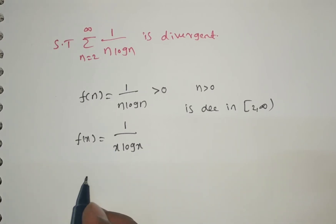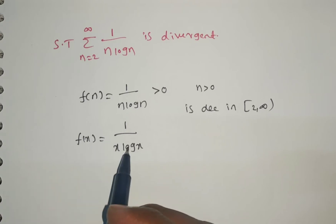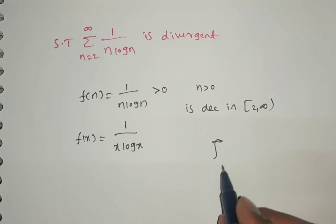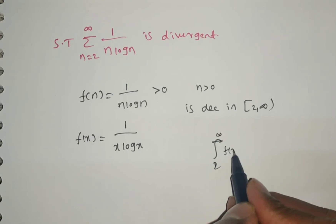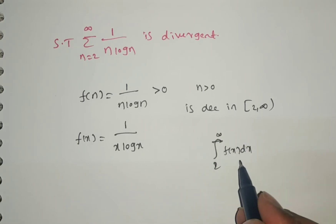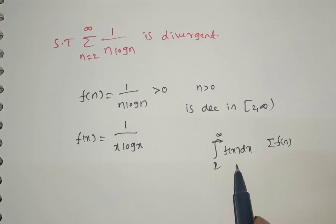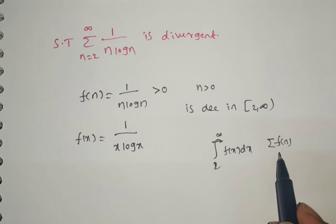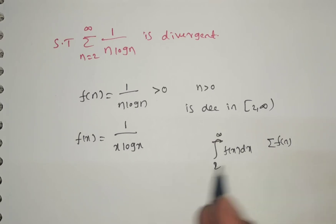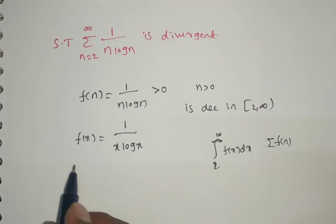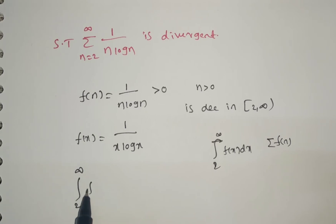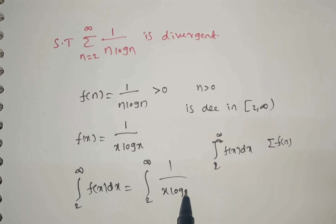So this is f of x. To test the series convergent by the integral test, we have to evaluate the improper integral from 2 to infinite of f of x dx. If this improper integral gives a finite value, then the series summation f of n is convergent. If it gives an infinite value, then the series is divergent. Now, the integral from 2 to infinite of f of x dx equals the integral from 2 to infinite of 1 by x log x dx.